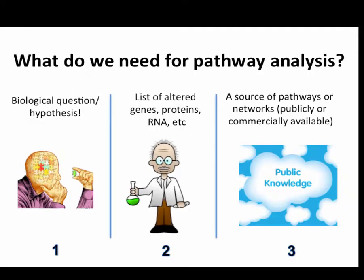What do we need from pathway analysis? Three different things. The first is a biological question and hypothesis — optional but helpful. The second is the list of altered genes or proteins that you got from your assay. And the last one is a source of pathways or networks — publicly or commercially available.